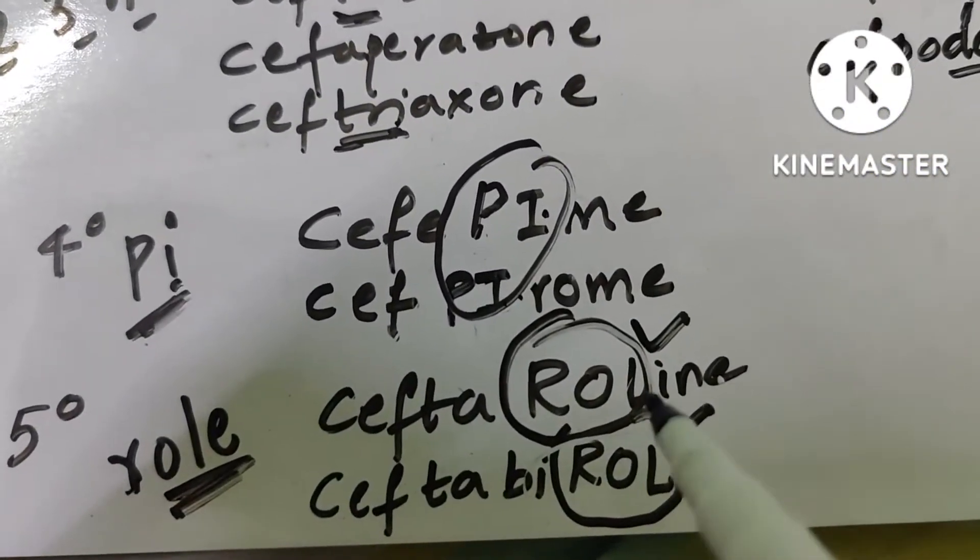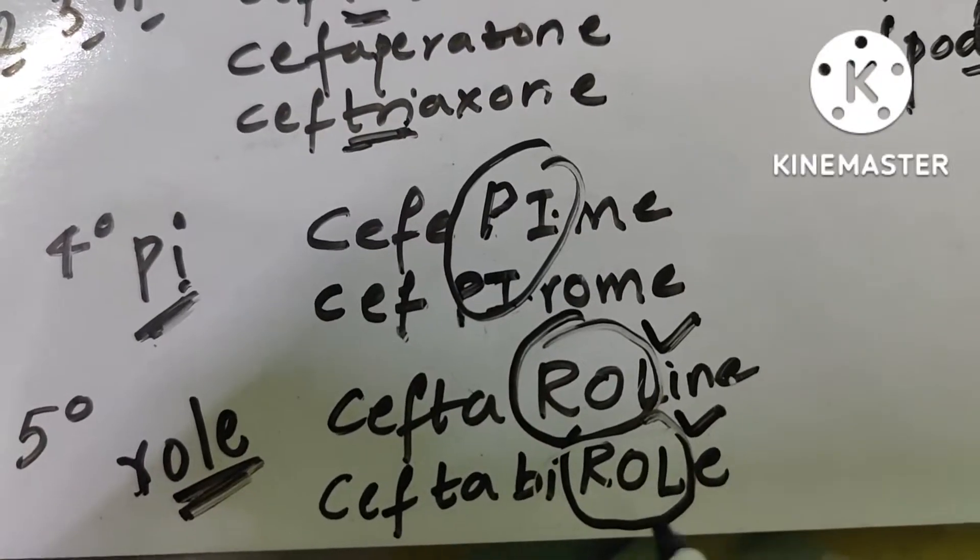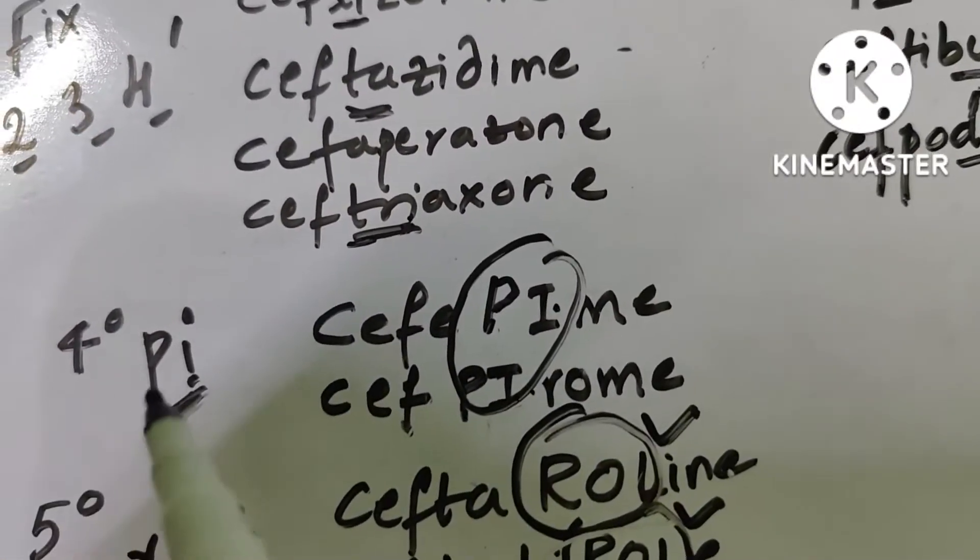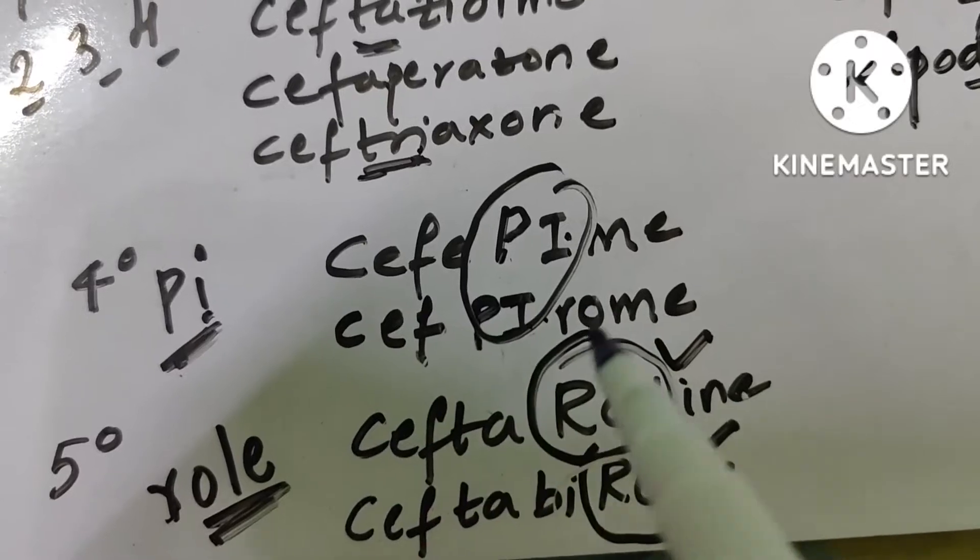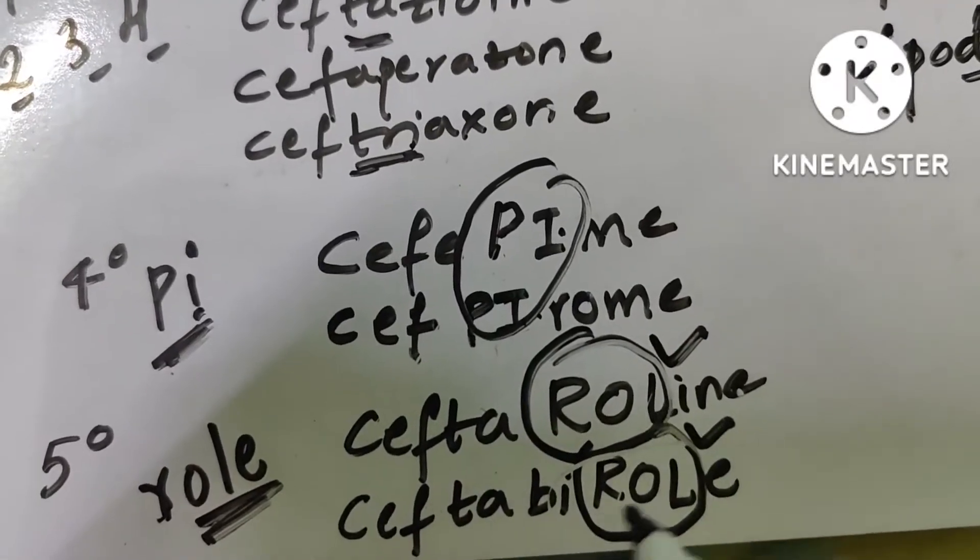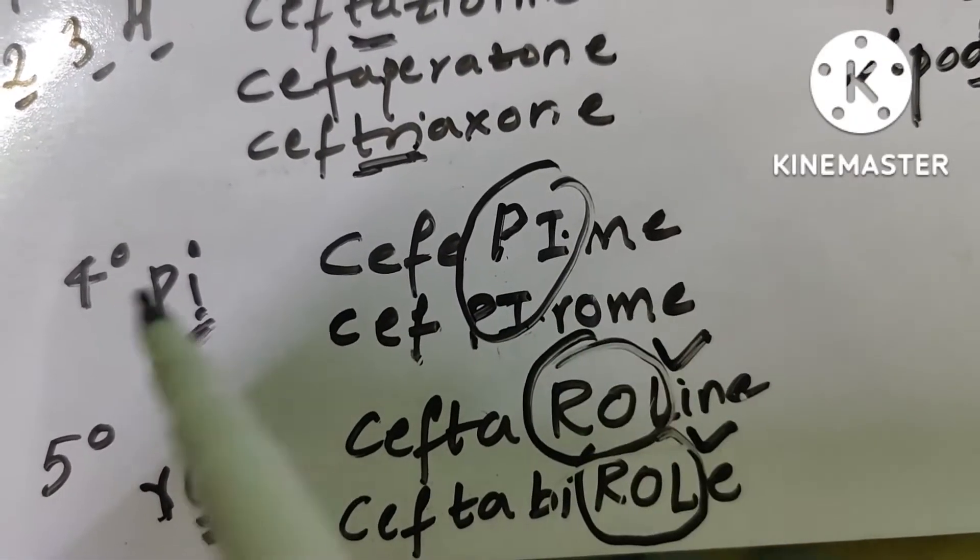Fifth generation is all about 'role' - ceftaroline has 'role' in it and ceftabiprol has 'role' in it. Fourth generation has 'pi' - that is cefepime and cefepirome. Role is fifth one and pi is fourth generation, so fourth and fifth are completed.